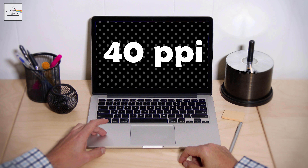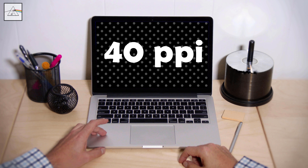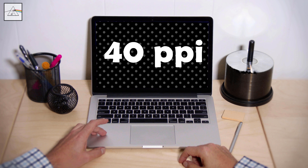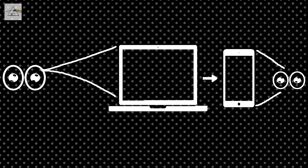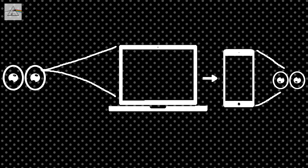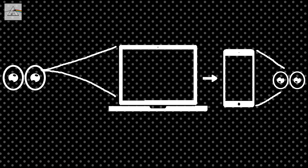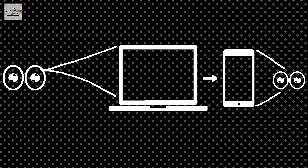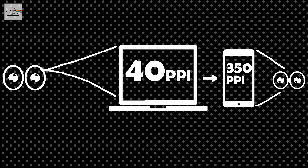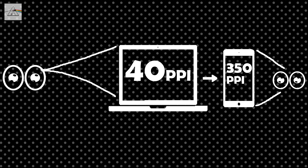And on a laptop, it is 40. Why? Because you are looking at it from a distance. The mobile phone is close to you and close to your eye, while the laptop screen is viewed from farther away.